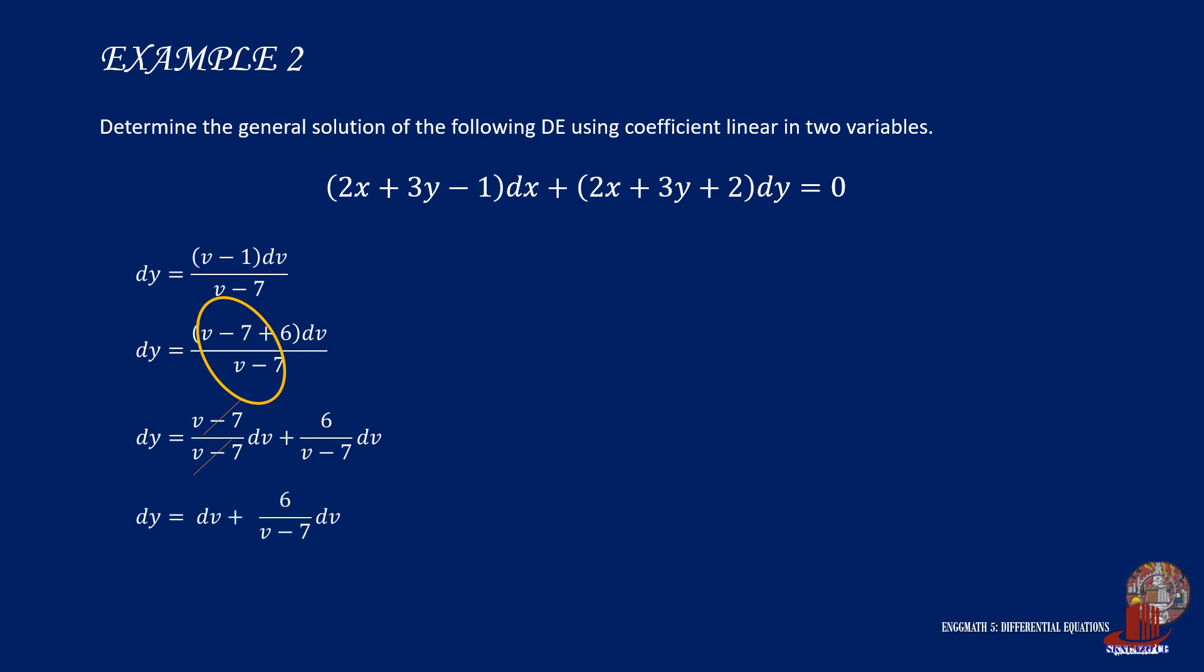The function is ready for integration, which will give y is equal to v plus 6 times the natural logarithm of v minus 7 plus c.